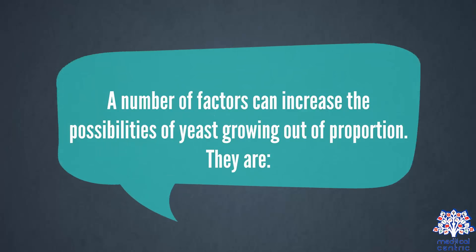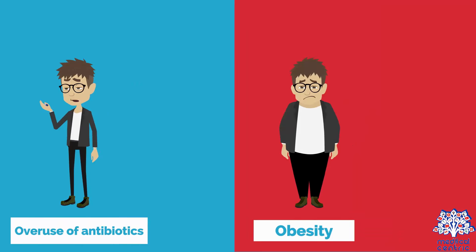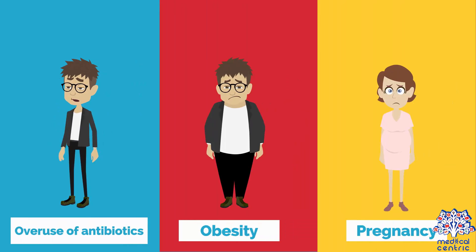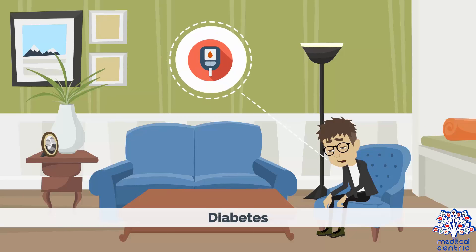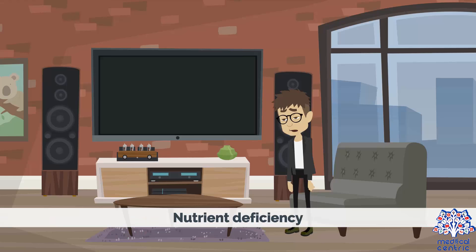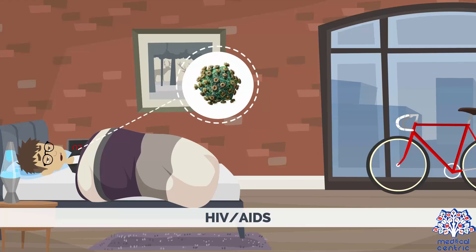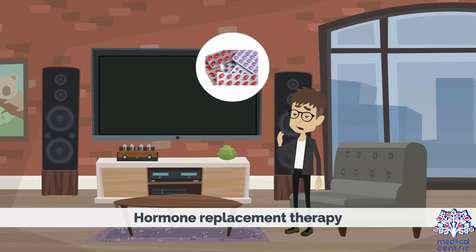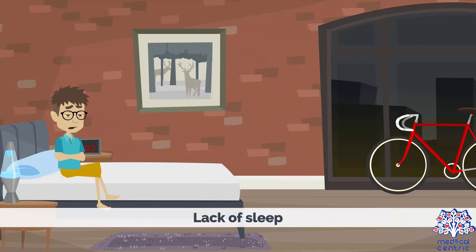A number of factors can increase the possibilities of yeast growing out of proportion. These include overuse of antibiotics, obesity, pregnancy, stress, diabetes, nutrient deficiency, cancer treatment, HIV or AIDS, hormone replacement therapy, infertility treatments, and lack of sleep.